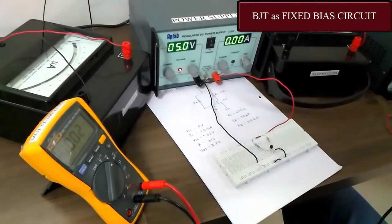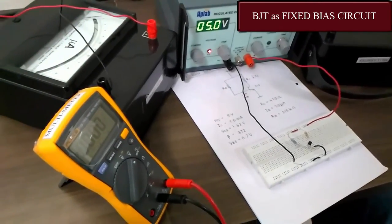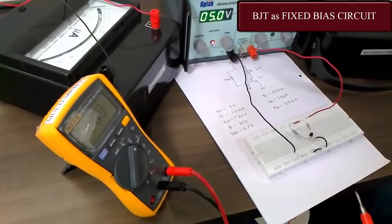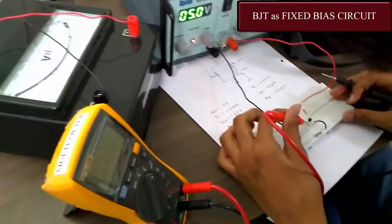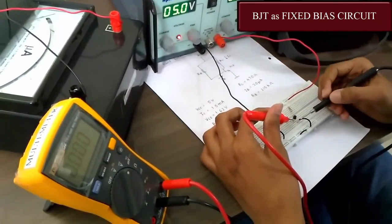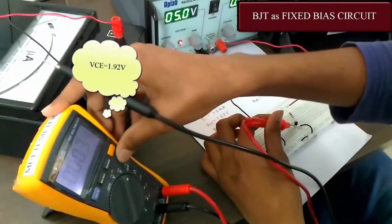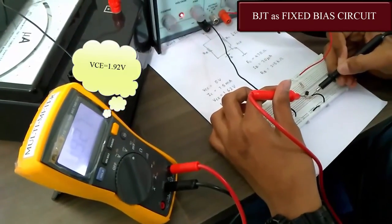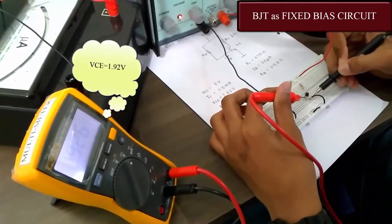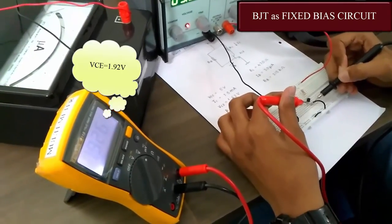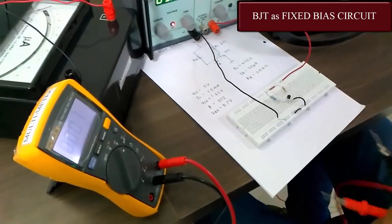Now let us check the VCE value. We have considered 1.62, so the value that we should get should be near to 1.62 volts. For checking VCE, connect your positive to collector and the negative to the emitter. Here we can see that the VCE value that we obtained is 1.92 that is close to 1.62. Therefore we can say that our designing is correct in terms of VCE.